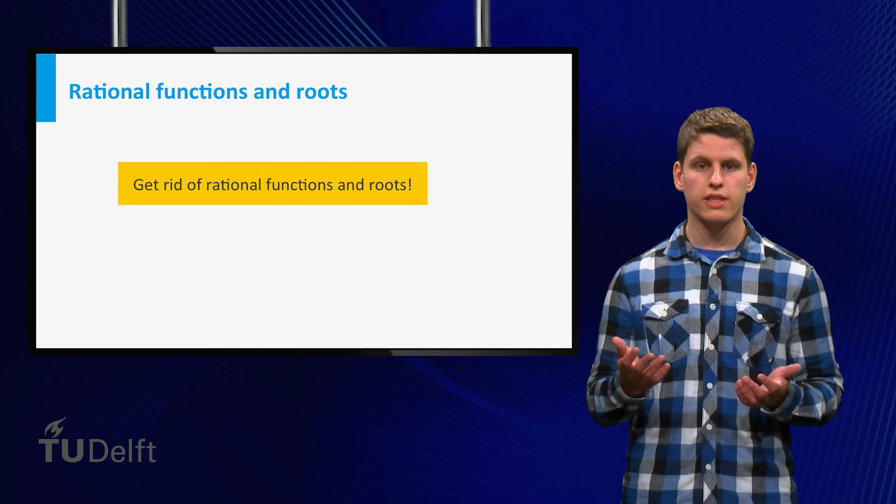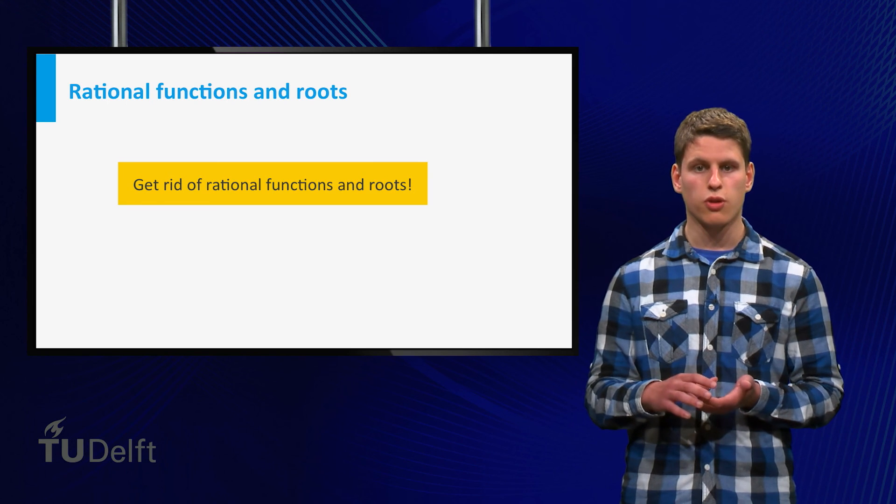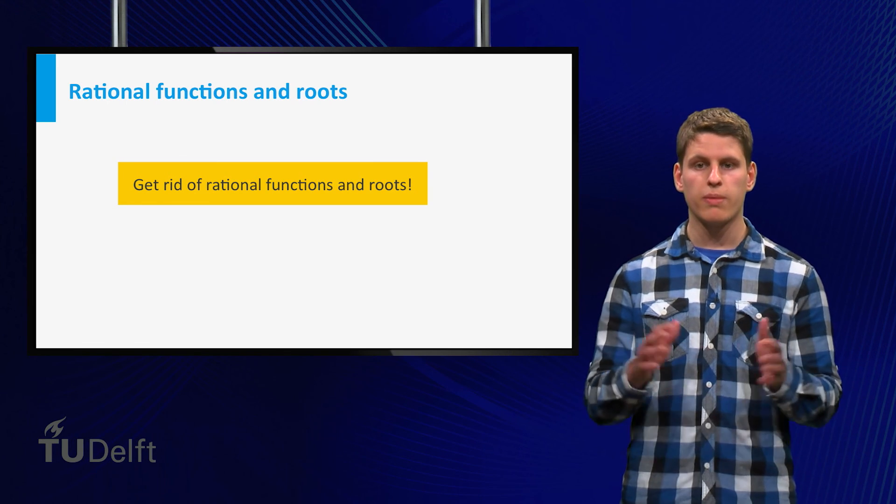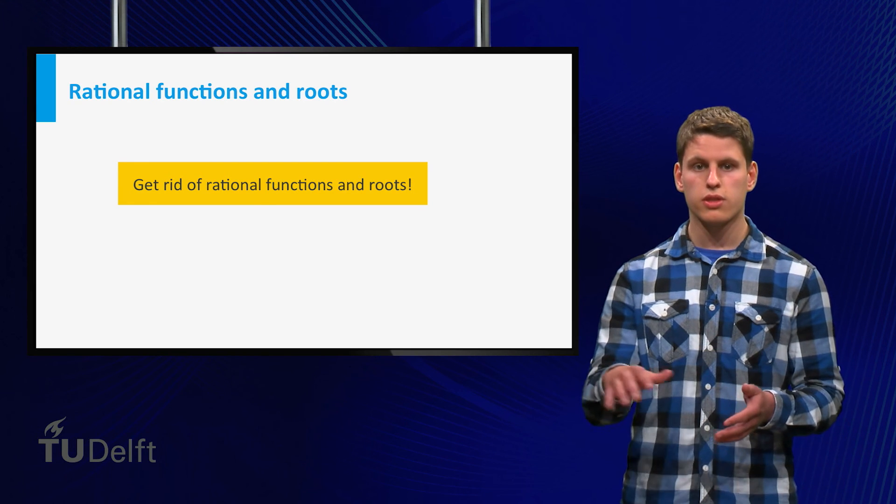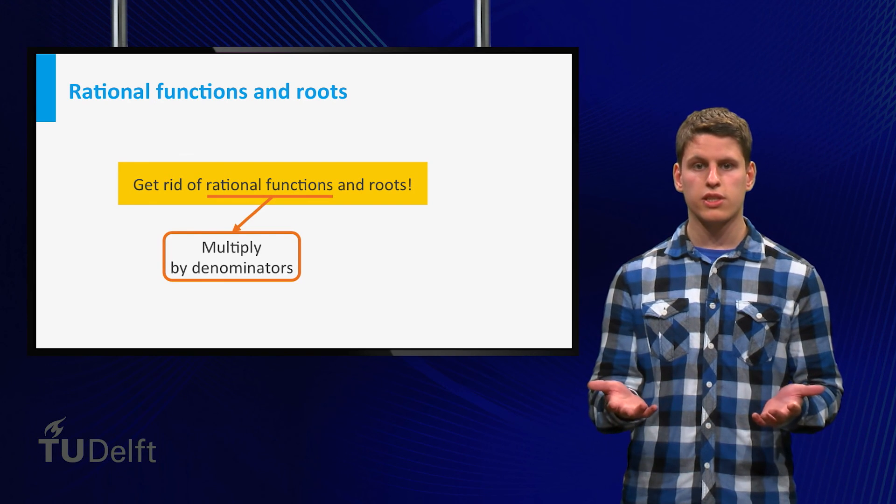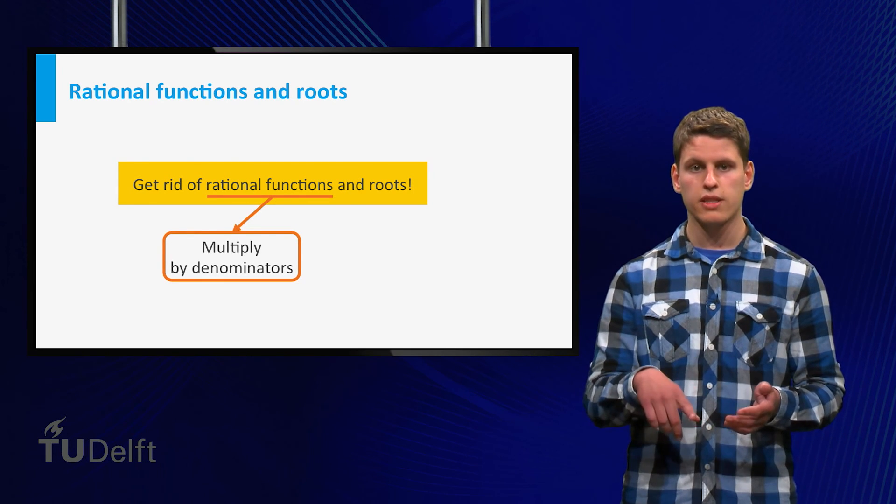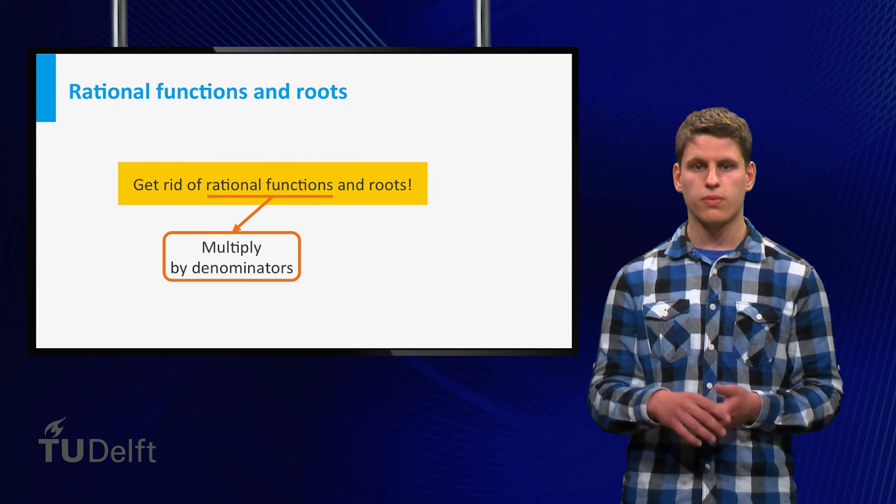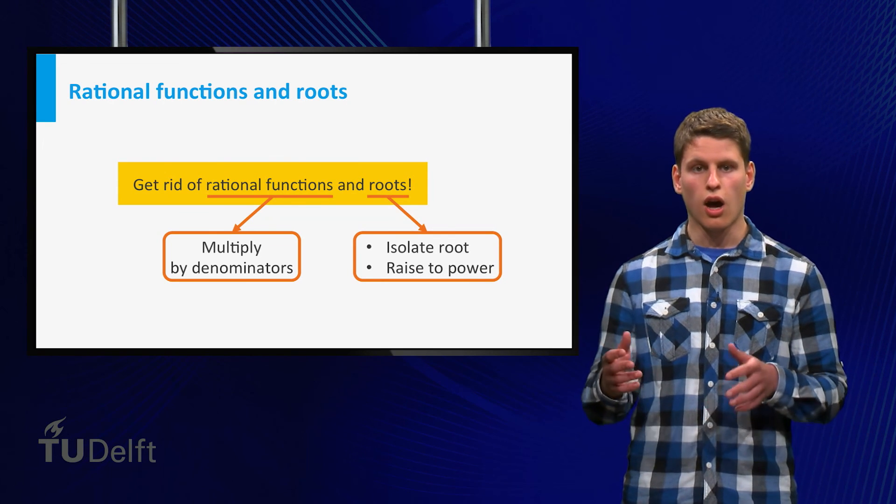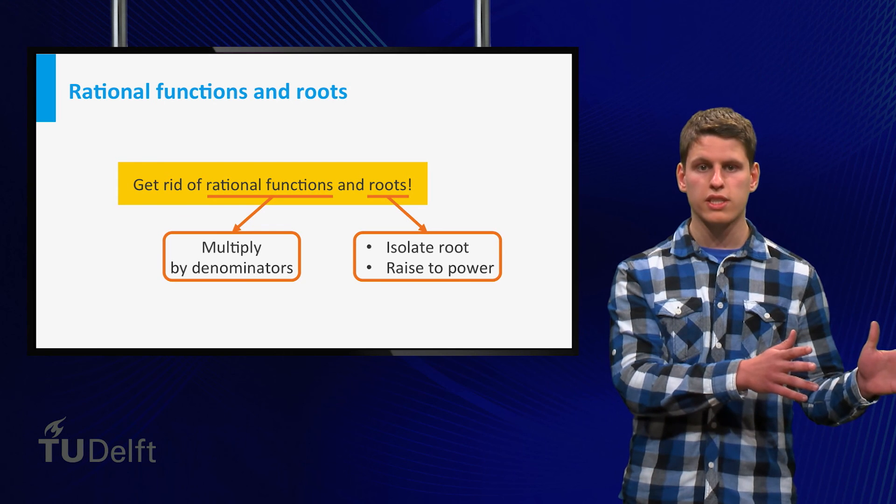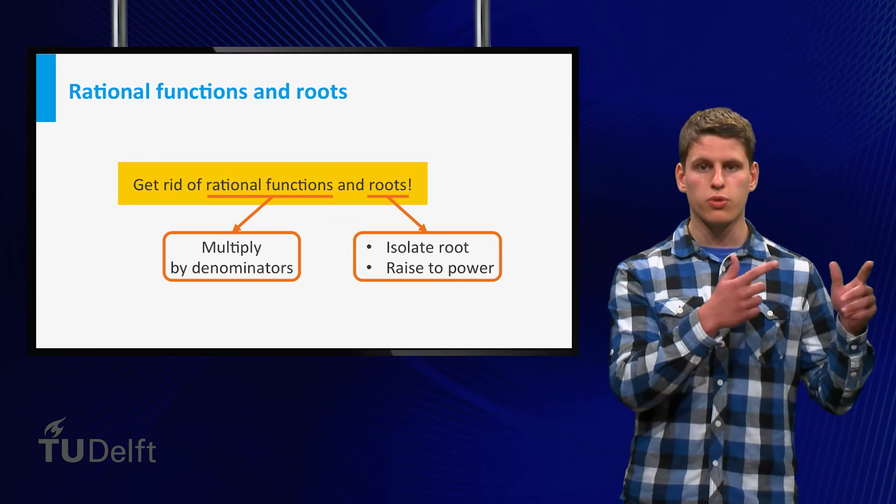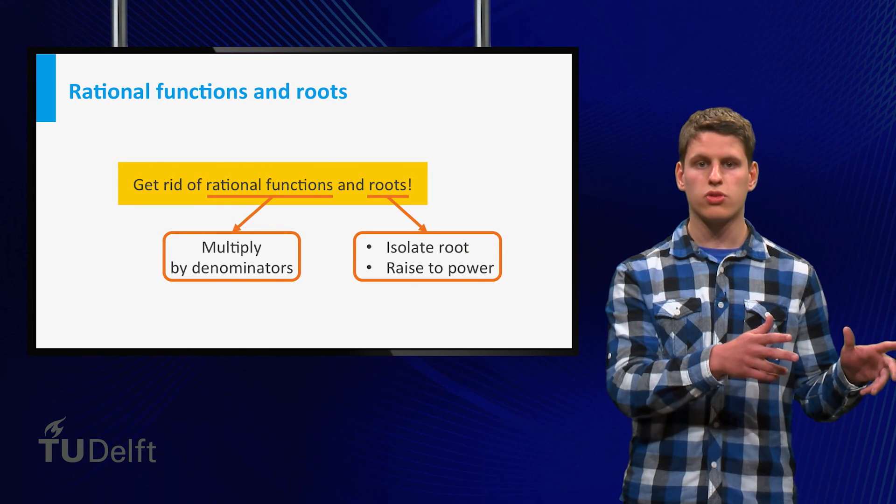We then considered equations involving rational functions and square roots. The main message is, try to get rid of those. In the case of fractions, get rid of the denominator by using multiplication. If you have a root, isolate it at one side of the equation, then raise to the appropriate power to eliminate it.